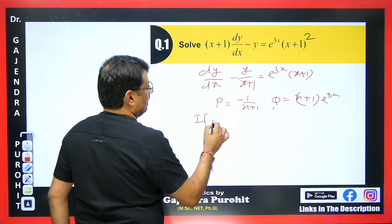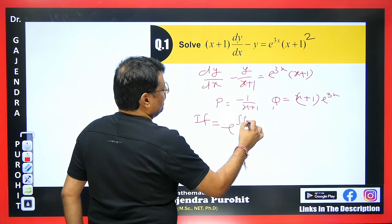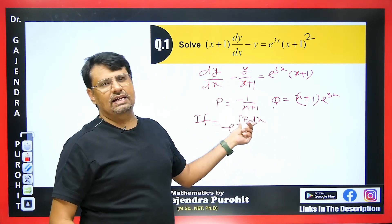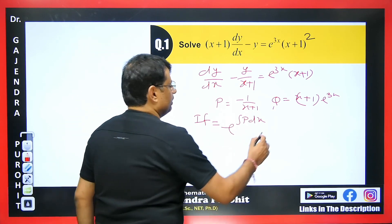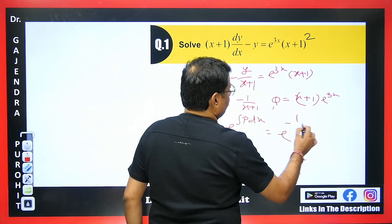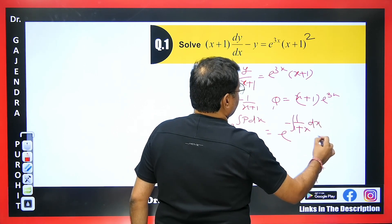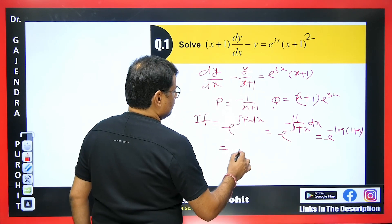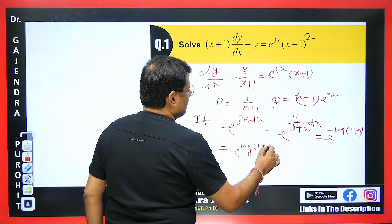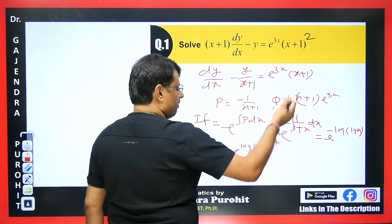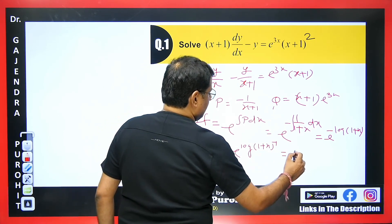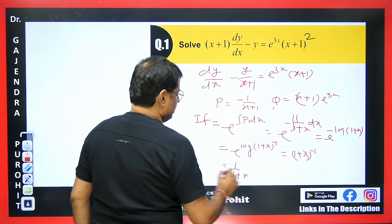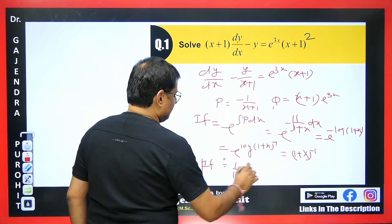Now we find the integrating factor: e to the power of the integral of P dx. Students often ask when does P dy come — here the equation is in x, so integration is with respect to x. This gives e^(∫−1/(1+x) dx) = e^(−log(1+x)). The negative sign moves to the power, giving e^(log(1+x)^(−1)). Log cancels with e, leaving 1/(1+x) as the integrating factor.